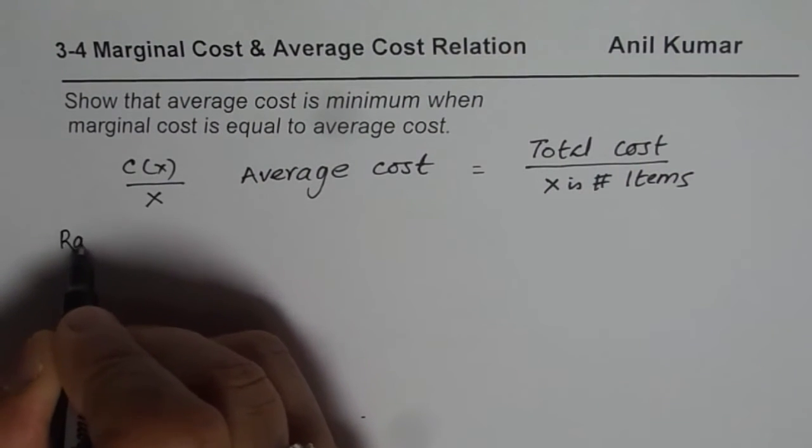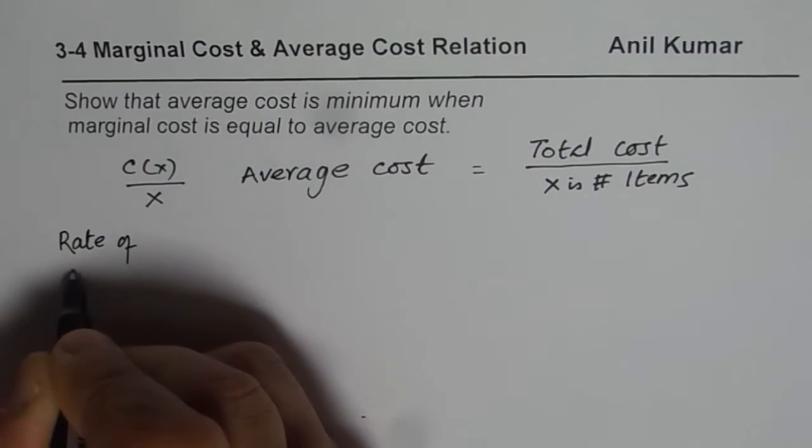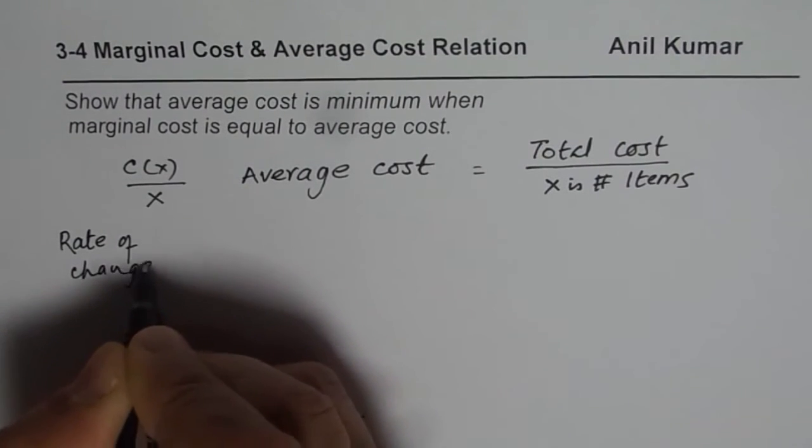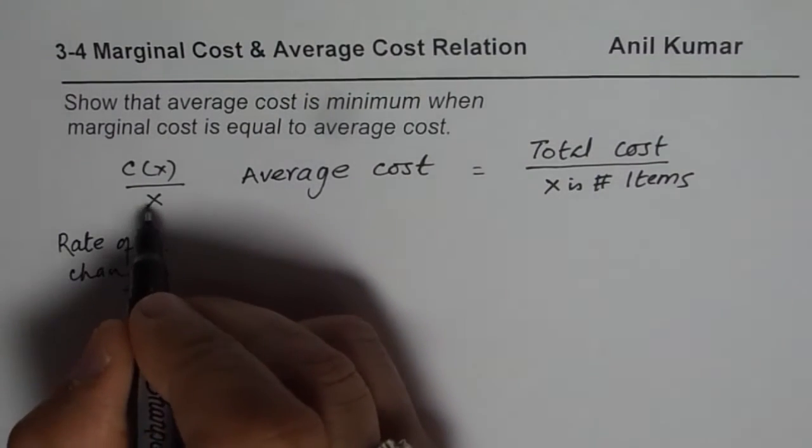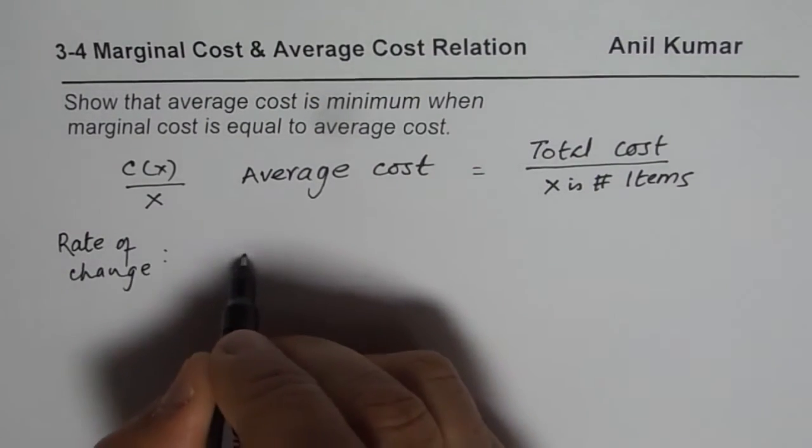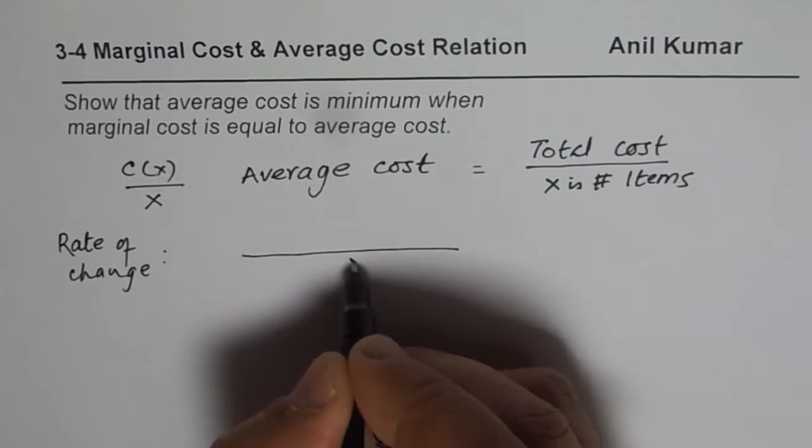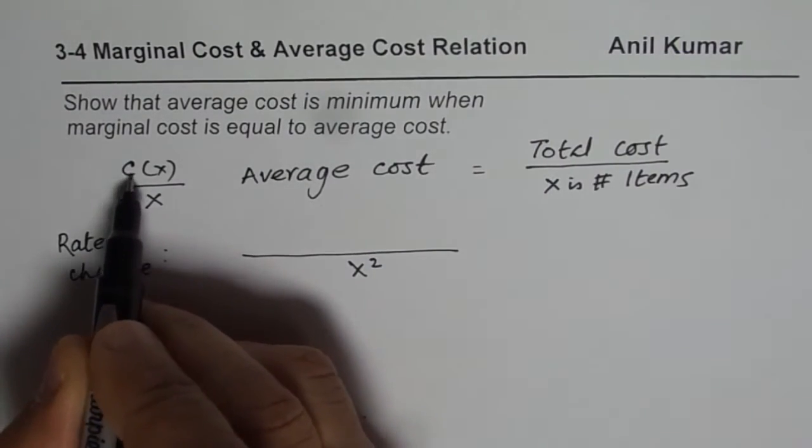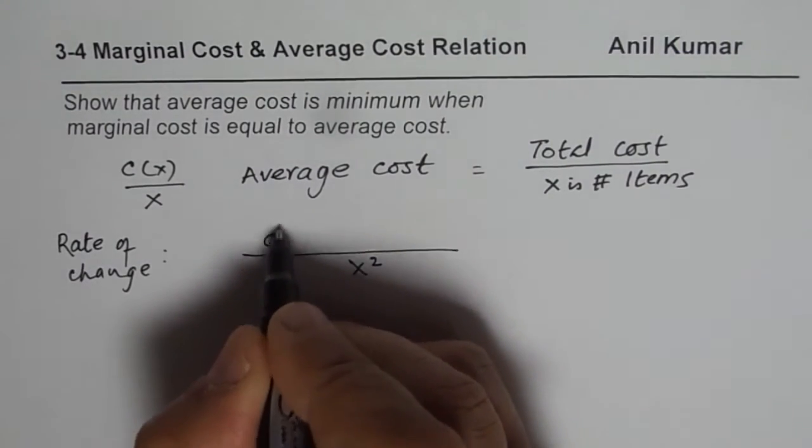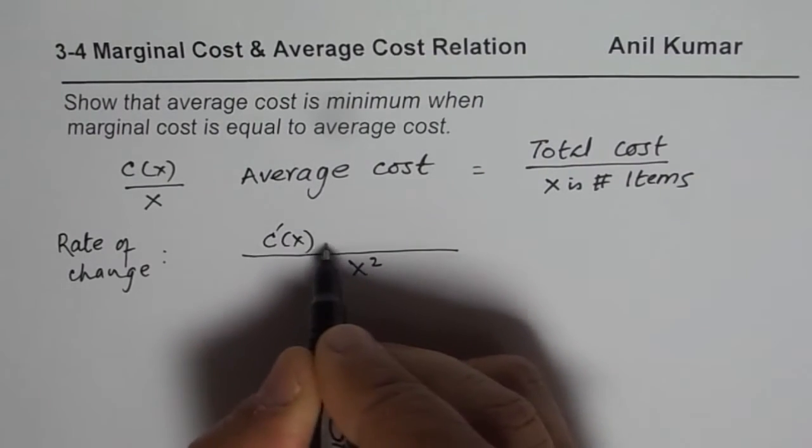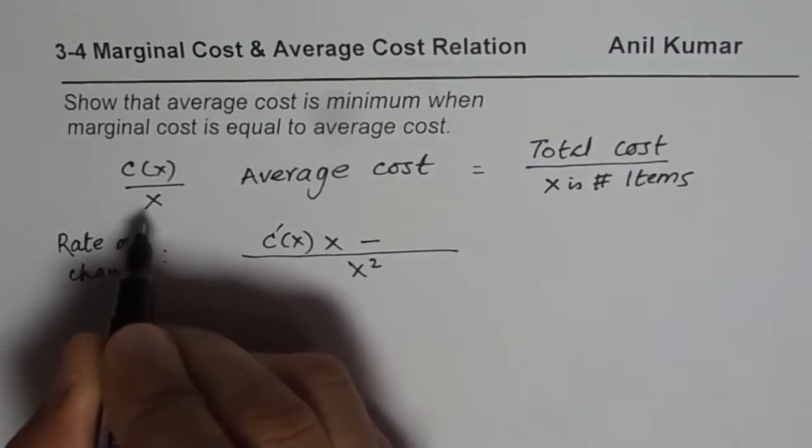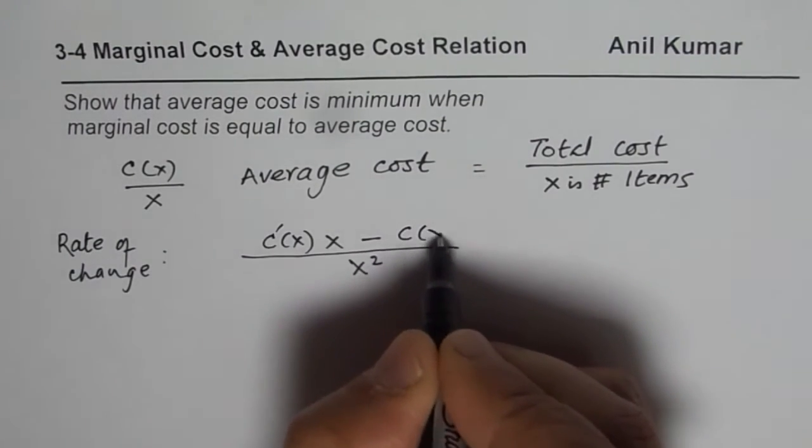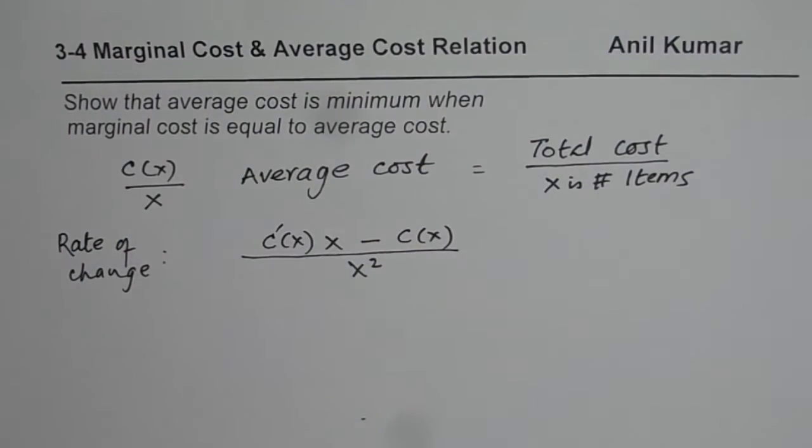So rate of change of this function is what? So we will apply the quotient rule. So quotient rule means x square. And derivative of the numerator, which is c'(x) times x minus the derivative of x is 1. So we get c(x). So that is the rate of change.